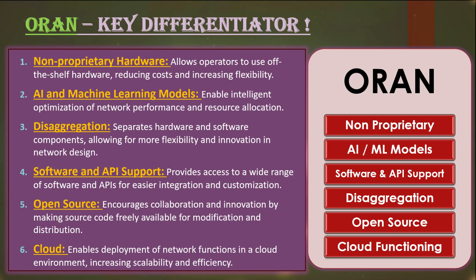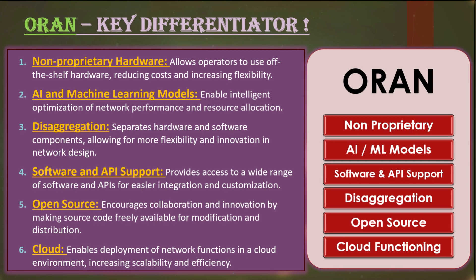At this point, these are the six main pillars of OpenRAN: number one — allows non-proprietary products and services; number two — disaggregation; number three — allows open-source features; number four — software and APIs; number five — cloudification; number six — AI, Artificial Intelligence, and Machine Learning.